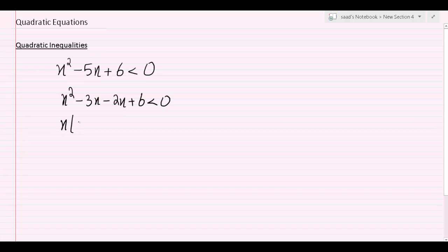So x times x minus 3, here I can factor out minus 2x minus 3, both the brackets are same so we're doing perfectly alright. x minus 2 times x minus 3 is less than 0.